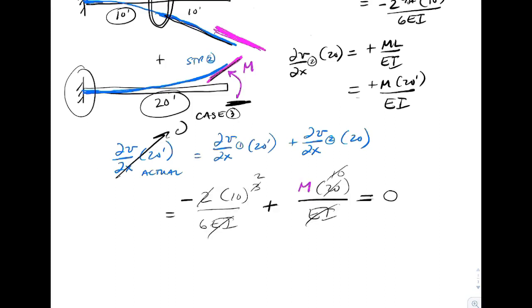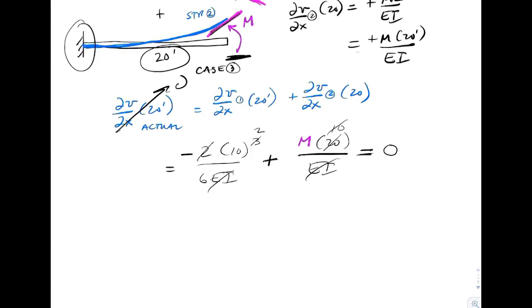And so we'll just plug in the values. That equals zero. We do a little bit of math on it. And we end up with an answer for M of 100 over 6, or 16.7 kip feet.